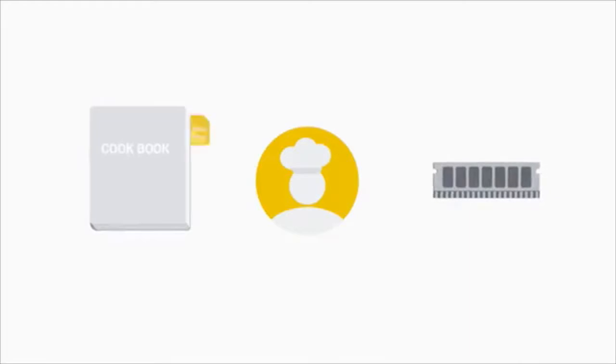Our chef works super fast — so fast that she can cook faster than she can read. So we take copies of the recipes and put them into RAM. Remember that RAM is our computer's short-term memory. It stores information in a location our CPU can access faster than it could with our hard drive. Now we can give our chef one or two recipes at a time instead of reciting the entire cookbook to her.